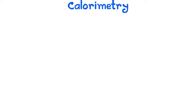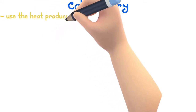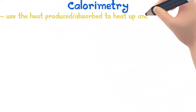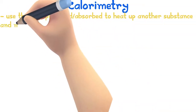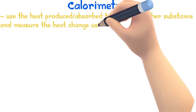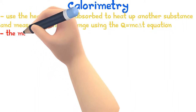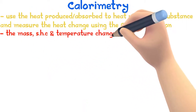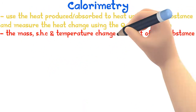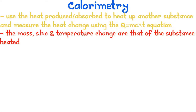Now that we have the equation, let's take a look at the experiments we will have to carry out. The technique for this is calorimetry — we use the heat from a reaction to heat another substance and then use the Q equals MC delta T equation to calculate the heat released. For this method, the mass, SHC and temperature change are all of the substance being heated. Let's do a calorimetry experiment for combustion.